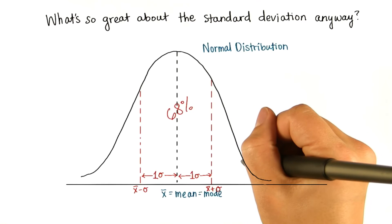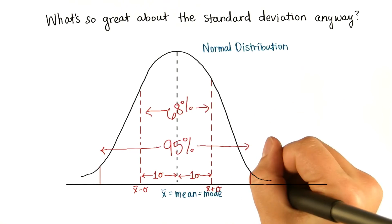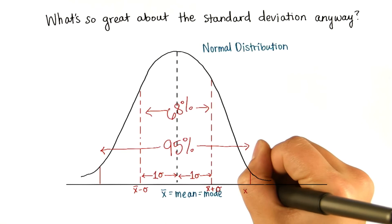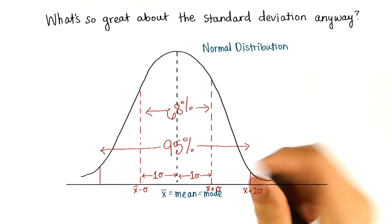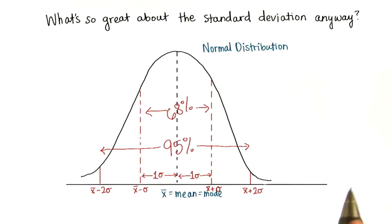And 95% of the data falls within two standard deviations. So this value here is x bar, the mean, plus two standard deviations. And this value is x bar minus two standard deviations. So 95% of the data will be between this value and this value.